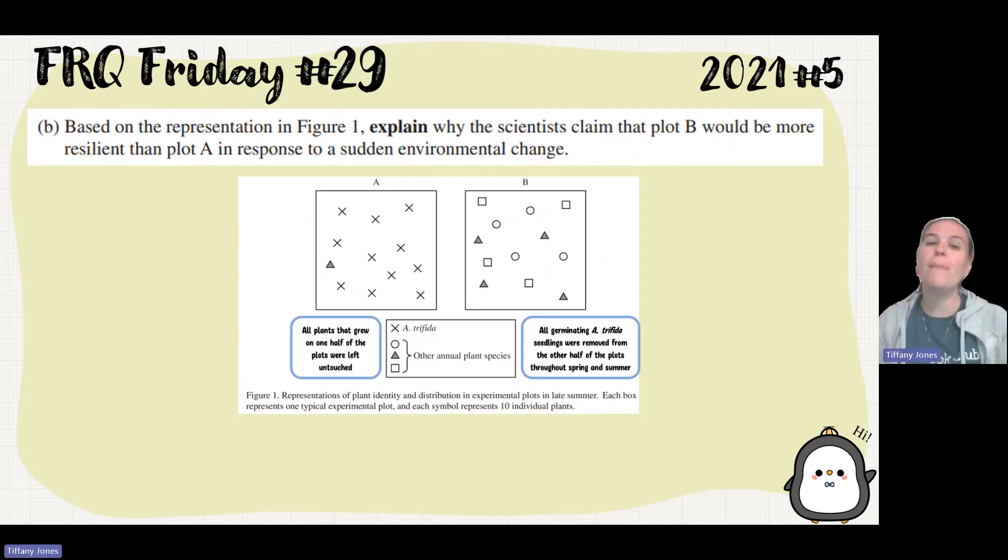Part B: Based on the representation in Figure 1, explain why the scientists claim that plot B is more resilient than plot A in response to a sudden environmental change. What we see with resiliency is that we need there to be more biodiversity. If I compare group A, biodiversity has to do with species richness, so the number of different species, as well as the abundance of those species. In A, I see there's a large fraction, a large percent of the population that is this one species, and I only see a richness of two.